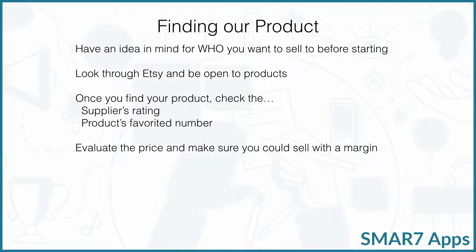Once you find your product, check the supplier ratings and products favorited number. Evaluate the price and make sure you can sell it with a margin. It really doesn't matter if you find an awesome product if you can't sell it at a profitable price. We need to make sure it's not a crazy high-cost product — something we can sell for a margin, hopefully like 50%, so if it costs $1 you can sell it for two or more. In our next video when we're contacting our supplier, we'll hopefully be able to get that cost down in a wholesale or some other manner.